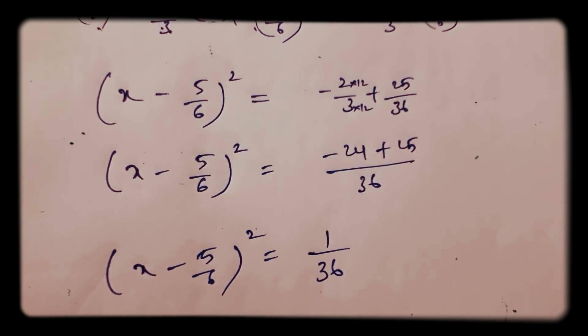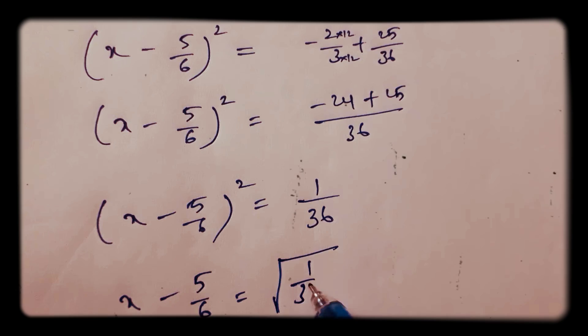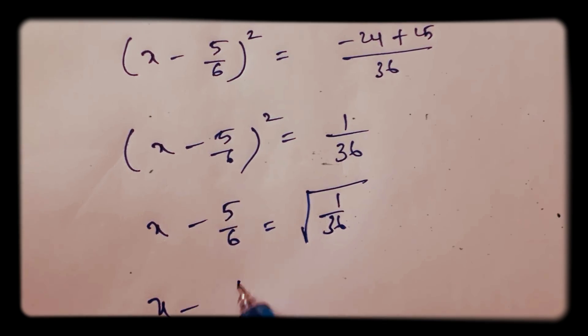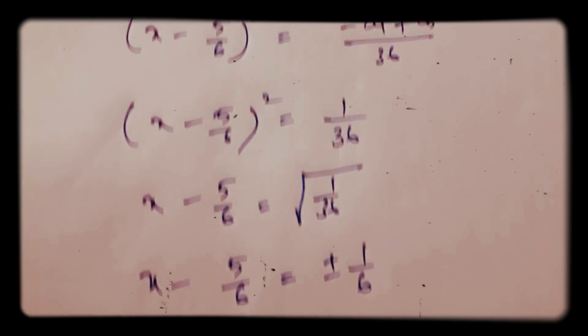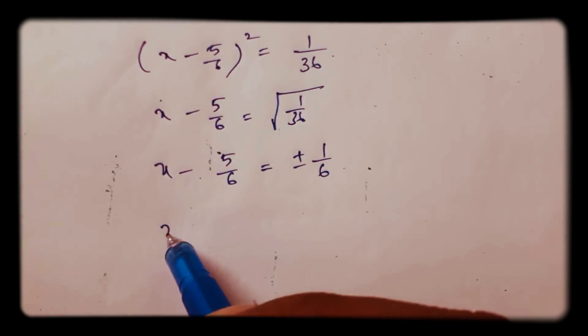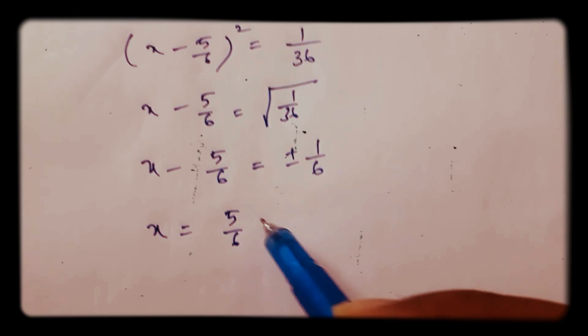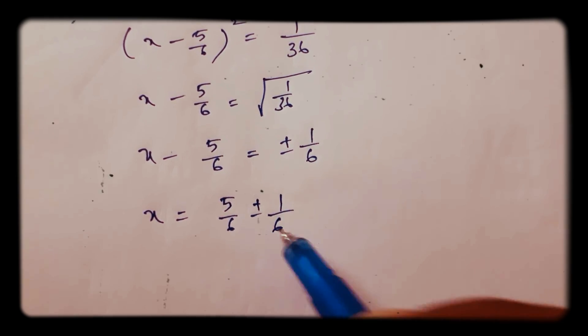x minus 5 by 6 is root 1 by 36. So x minus 5 by 6 equals plus or minus 1 by 6. Root 36 is 6. So x equals 5 by 6 plus or minus 1 by 6.